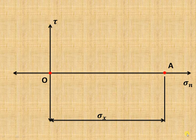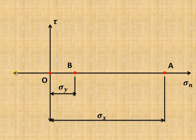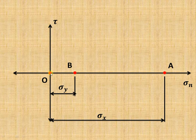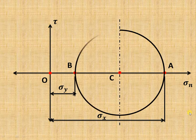Sigma Y is equal to 30 MPa, also a positive tensile stress. Tensile stresses are considered positive, so on the positive X axis we take 3 centimeters to represent Sigma Y. The right side of the axis is the tensile (positive normal) stress axis, and the left is the compressive (negative normal) stress axis. Since both stresses are tensile, both points A and B lie on the right-hand side. We find the midpoint C of segment AB, and with C as center and CA or CB as radius, we draw the Mohr's circle.